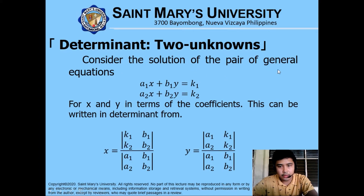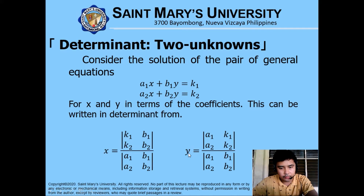Consider the solution of a pair of general equations: a sub 1 times x plus b sub 1 times y equals constant k1, and a sub 2 times x plus b sub 2 times y equals k2. To solve for x and y in terms of the coefficients, this can be written in determinant form. For x, the values a1 and a2 are replaced with k1 and k2; for y, k1 and k2 replace the coefficients b1 and b2.